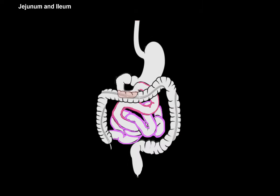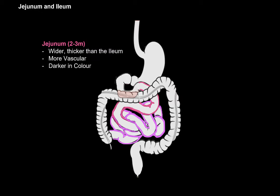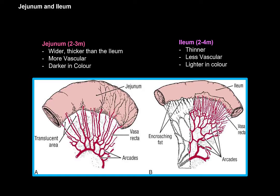Now let's talk about the jejunum and the ileum. While there's no strict demarcation, there are a few ways to distinguish between them. The jejunum is thicker and wider than the ileum and more vascularized, making it look darker. The ileum is thinner and less vascularized, hence lighter in color. Most of the absorption happens in the jejunum, and it needs to be wider and thicker to increase surface area for more efficient absorption. It's also highly vascularized in order to absorb all the nutrition.